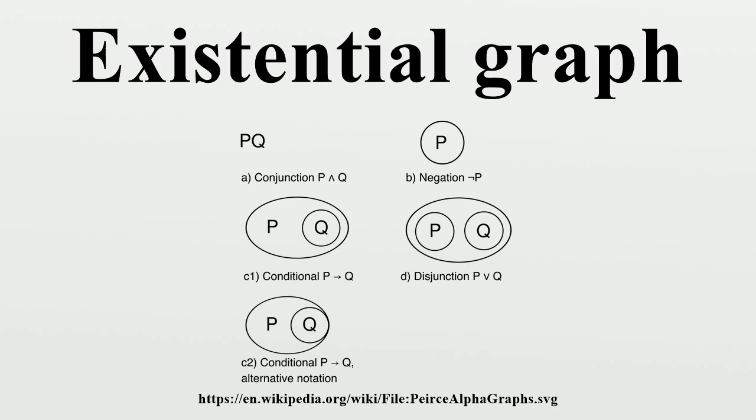If the shallowest part of a line of identity has even depth, the associated variable is tacitly existentially quantified. Zeman was the first to note that the beta graphs are isomorphic to first-order logic with equality.